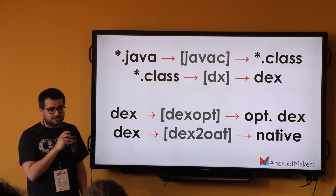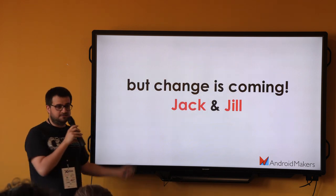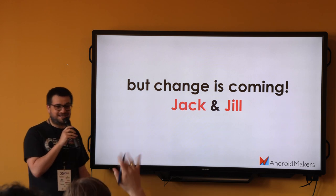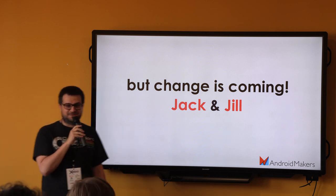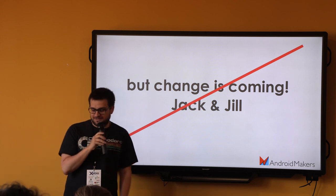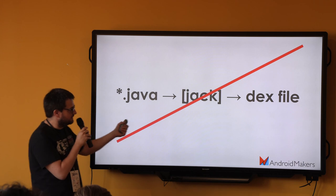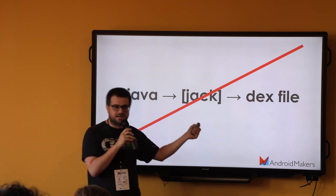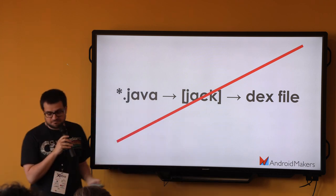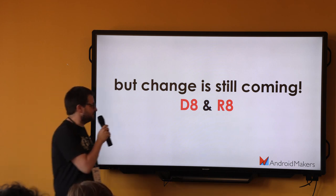Google said a change was coming — Jack and Jill. Who remembers Jack and Jill? Who used Jack and Jill in production? That change is not coming anymore, at least not this change. The idea was: from Java file, go to Jack, and Jack gets to the DEX file. But change is still coming — we've got D8 and R8.